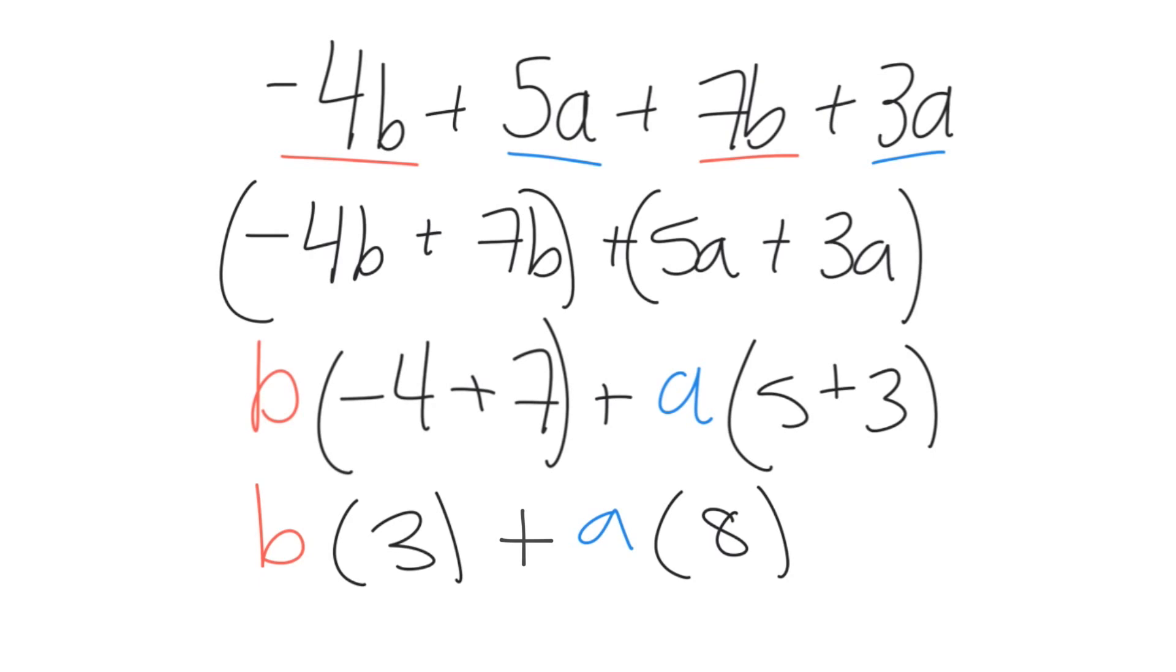Lastly, drop the brackets from each group and write the answer in conventional form, which is where the numerical coefficient comes before the variable. So we rewrite this as 3b plus 8a.